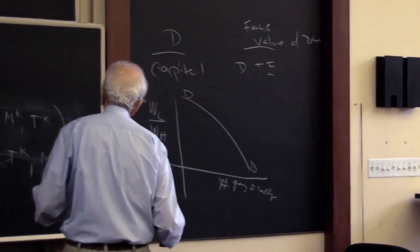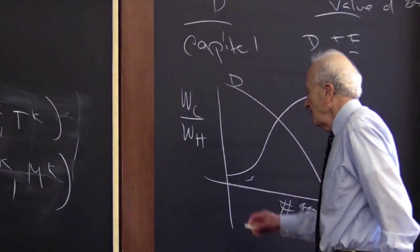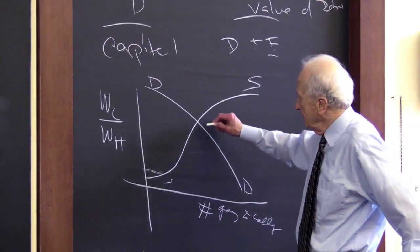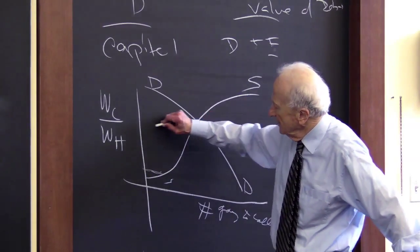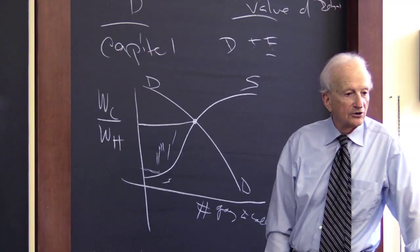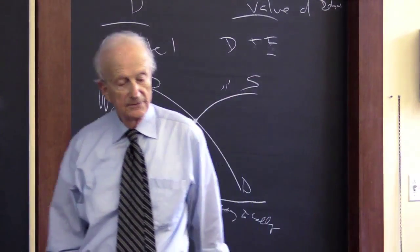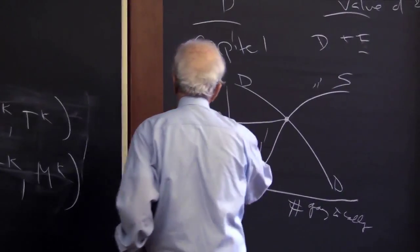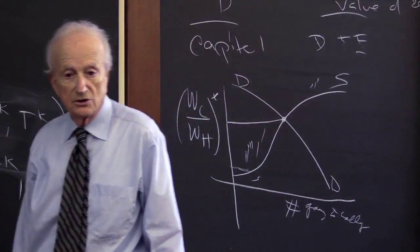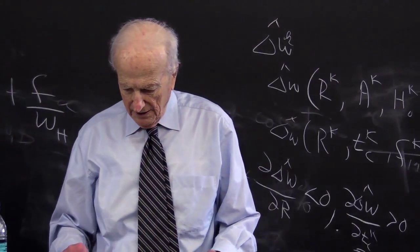Think of a supply curve where people who enter early have a low compensating differential — so the actual differential is high relative to what they need, and they earn rent from being a college graduate. People at the margin are just indifferent between the two occupations. The equilibrium compensating differential — call it 'star' — separates those who do better as college graduates from those who do better as high school graduates. The shape of this supply curve depends on the joint distribution of all these individual variables.